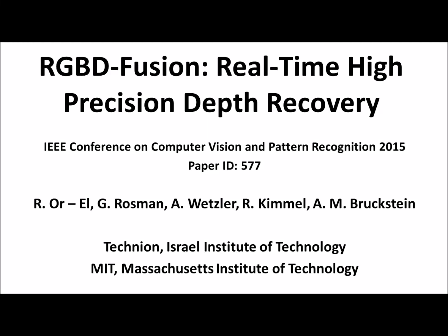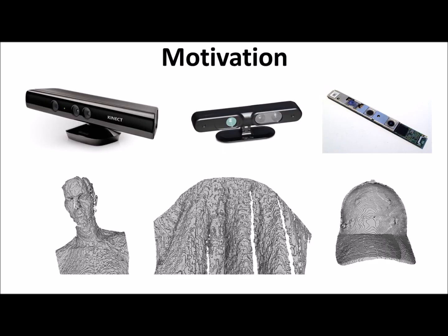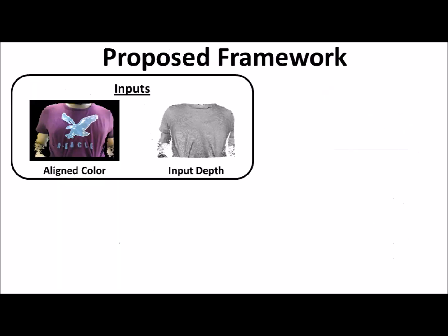We present RGBD Fusion, a method for real-time high-precision depth recovery. Commodity depth scanners such as the Microsoft Kinect, Asus Xtion, and the soon-to-be-released Intel RealSense provide relatively low-resolution depth images that are not able to capture subtle details. Our proposed framework improves the quality of the depth by fusing data from an aligned color image into the depth profile.